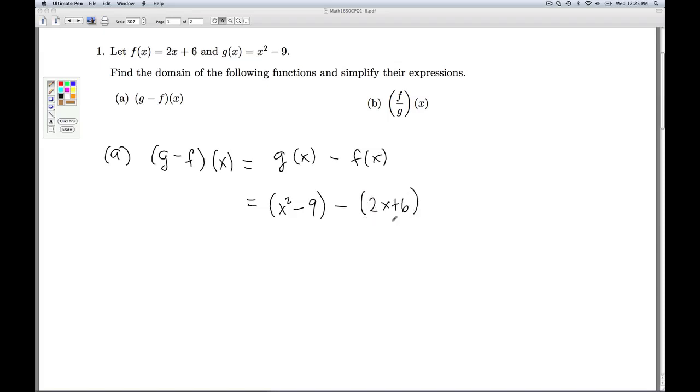And it's really important you remember the parentheses here. So we simplify, x squared minus 9, minus 2x minus 6. So if you didn't use the parentheses, there's a good chance you would have forgotten to take the opposite of that 6. Combine the like terms, I've got an x squared, minus 2x, minus 15. So that would be the formula for g minus f of x.